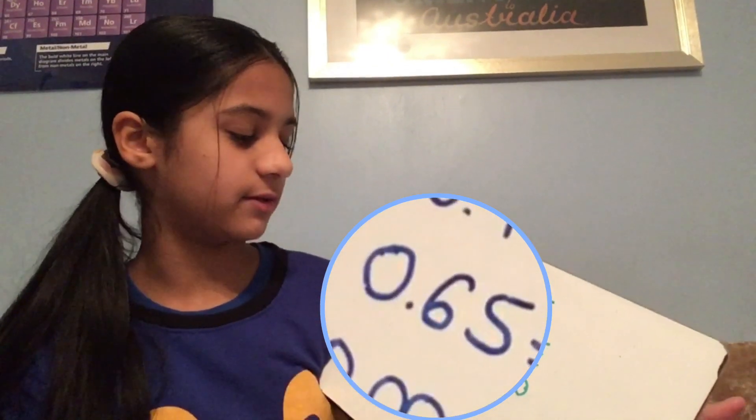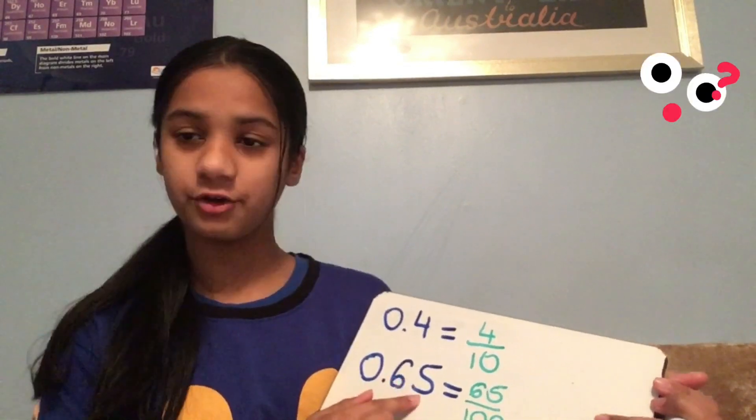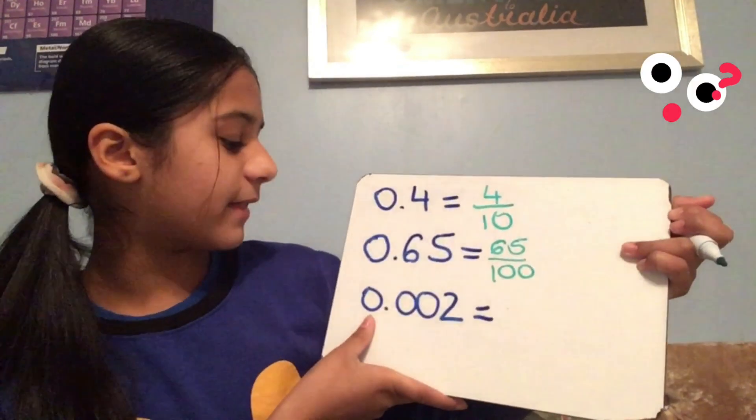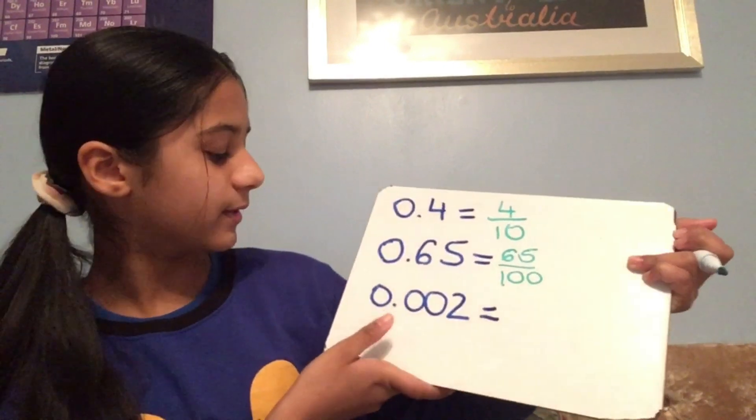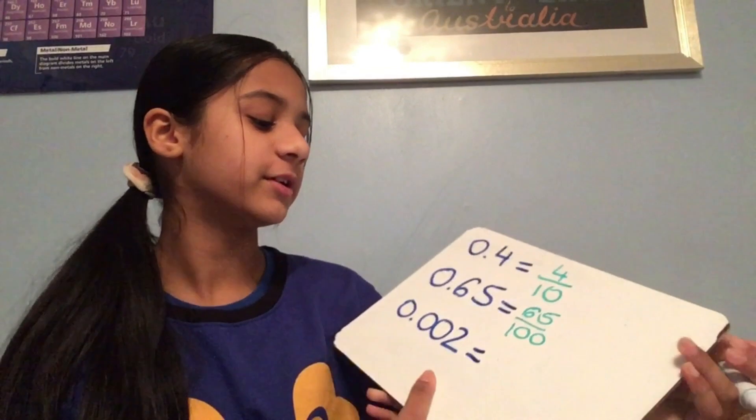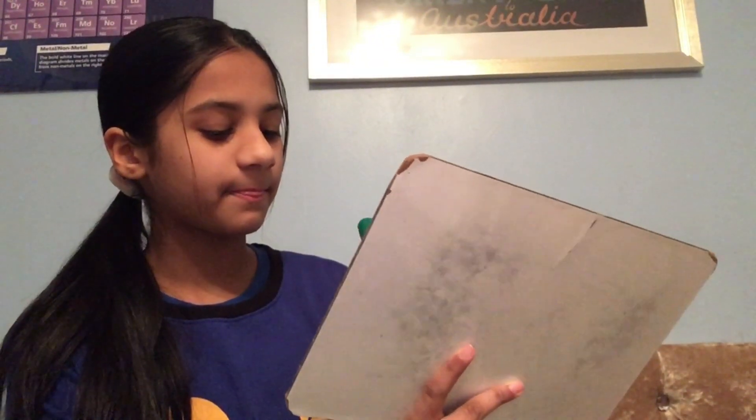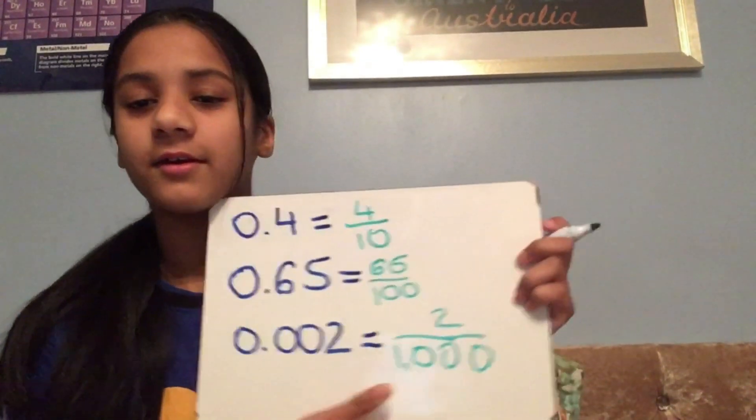It's really easy once you get it, and you basically need to look at what place it is. So, this is 1s, 10ths, and 100ths. And then, this is 1s, 10ths, 100ths, 1,000ths. So, then you'd write 1,000, like this. And then, there's a 2. So, you just write a 2 like this.